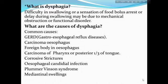What are the causes of dysphagia? The most common causes are gastroesophageal reflux disease, carcinoma esophagus, foreign body in esophagus, carcinoma of pharynx or posterior one-third of the tongue, corrosive stricture, esophageal candidal infection, comorbid syndrome, and mechanical swallowing.